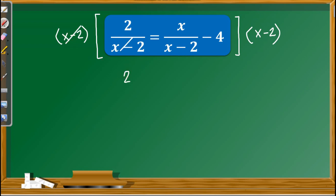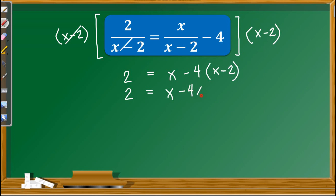Multiplying the LCD to the left term, we cancel out x minus 2, so we only have 2. On the right side, multiplying x minus 2 by the first fraction cancels x minus 2, leaving only x. For the constant negative 4, since its denominator is only 1, we multiply negative 4 by x minus 2, giving us negative 4 times x minus 2. Next, we simplify.